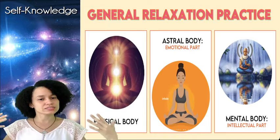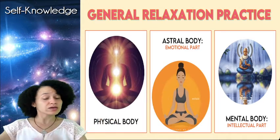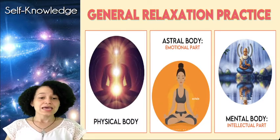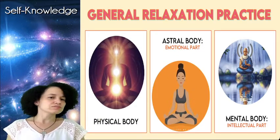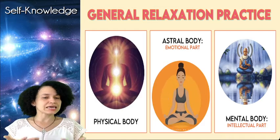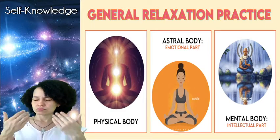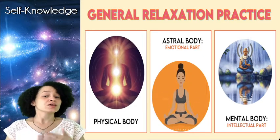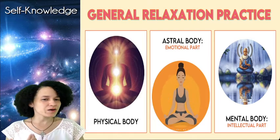Then we order all the muscles, nerves, and tendons to relax, to be still, and to calm down. You can repeat this three times until you feel your whole body is completely relaxed. Then you relax your astral body or emotional part. You can do that by concentrating on your breathing — observing the entrance and exit of the air for around one to two minutes. You inhale, hold a little, and exhale, and that way you are going to be relaxing your emotional part or astral body.